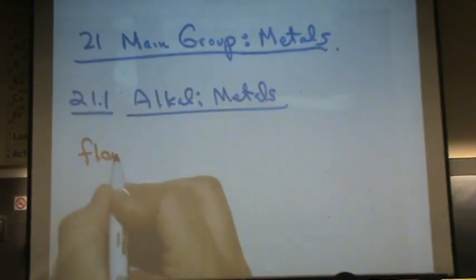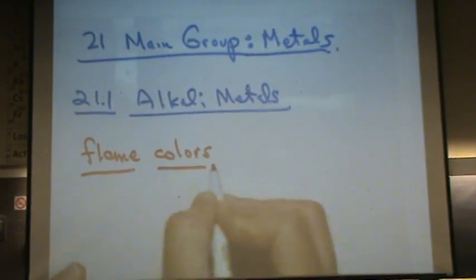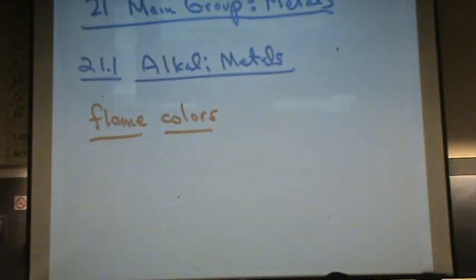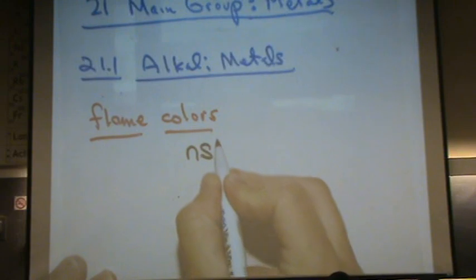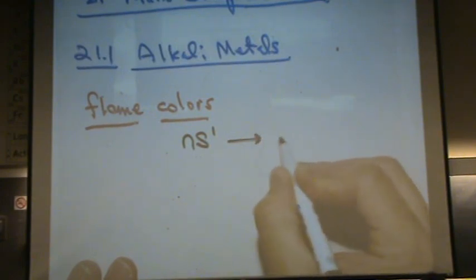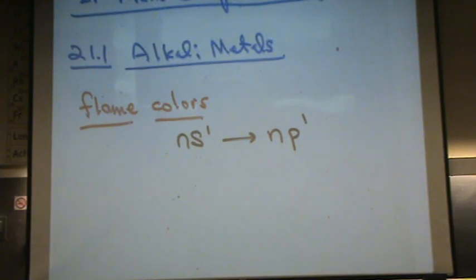One, flame colors. These all have an NS1 electron configuration, like 1s1, or really 2s1, 3s1, 4s1, etc. With a little bit of energy, you can bump that electron up to the P level, the NP1. That change in energy matches wavelengths of visible light, just like the transition metals.